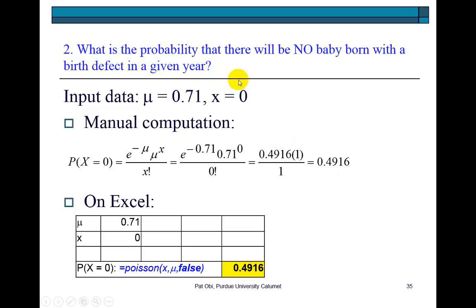This says, what's the probability of no baby born with a birth defect? So that's the probability that x takes on the value of 0. That comes out to be 0.4916. And using Excel, it's going to be using the false criterion to get this.